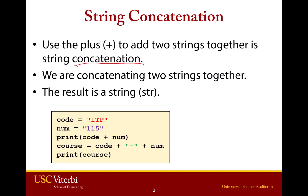For example, if we have code equals 'itp' and num equals '115' — so those are both strings, because we have the quotes — if we say print code plus num, that's going to give us a string, smooshing them together. If we say course equals code plus dash plus num, we also get a string. So we're combining three strings: itp, then the dash, then 115. The plus sign concatenates strings together directly as you have them written.